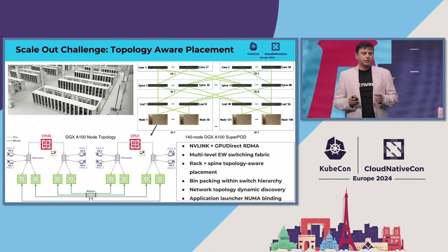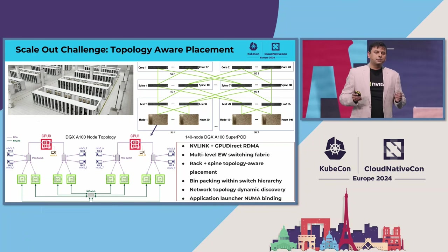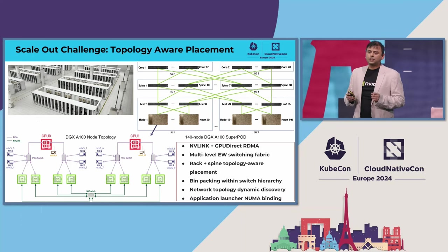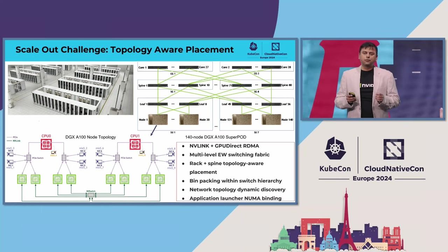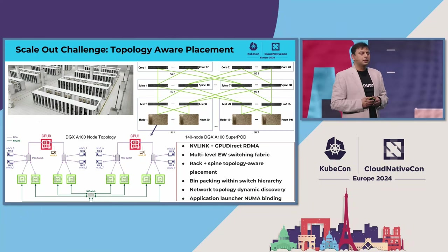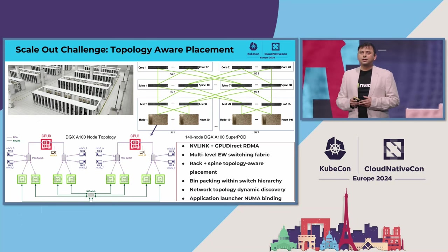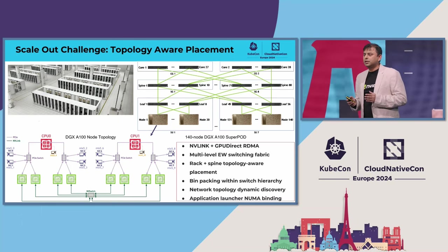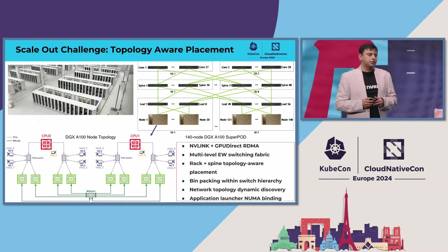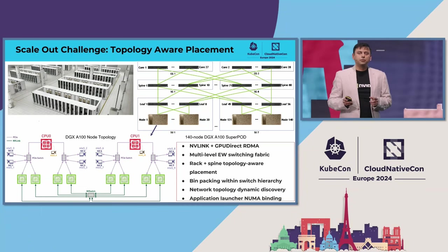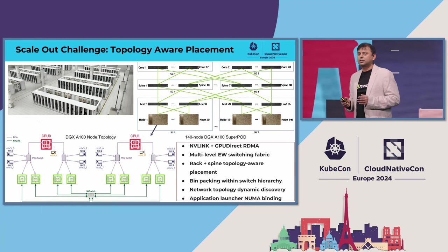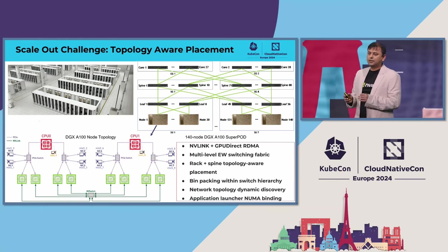First, an optimal placement that minimizes the hop distance between the nodes, and second, bin-packing these multi-node jobs within switching hierarchies to improve cluster occupancy. Within a node, the application launcher also needs to be NUMA-aware so that it can bind the training processes to the appropriate CPU core complex. For example, in a DGX A100 node there are eight NUMA nodes, but the eight GPUs are connected to only four of them. Hence, topology-aware placement of a training application is key, both within and across nodes.